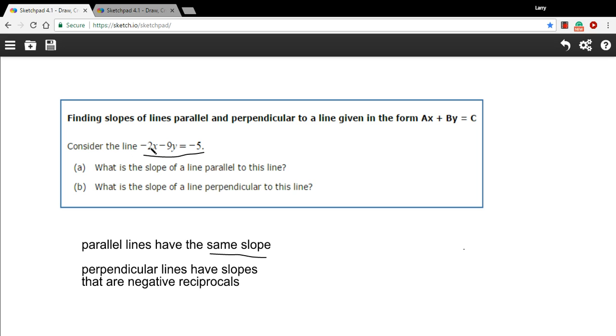Let me show you how that works with this one. Consider this line: negative 2x minus 9y equals negative 5. And we want the slope of a parallel line and a slope of a perpendicular line to this line.